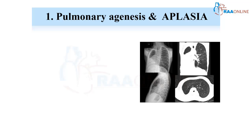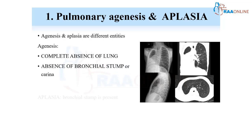The first condition is pulmonary agenesis and pulmonary aplasia. Agenesis and aplasia may sound similar but are quite different. In agenesis, both the lung and the bronchial stump are absent — a complete absence picture. In aplasia, only the lung parenchyma is absent whereas the bronchial stump is present. So there are some key differences between agenesis and aplasia.